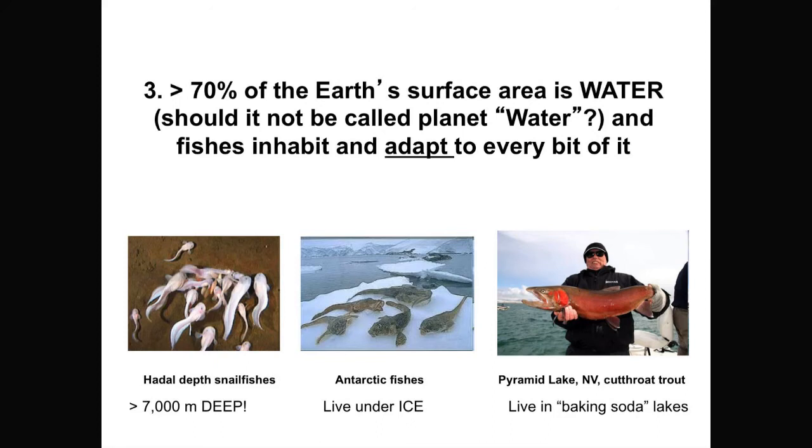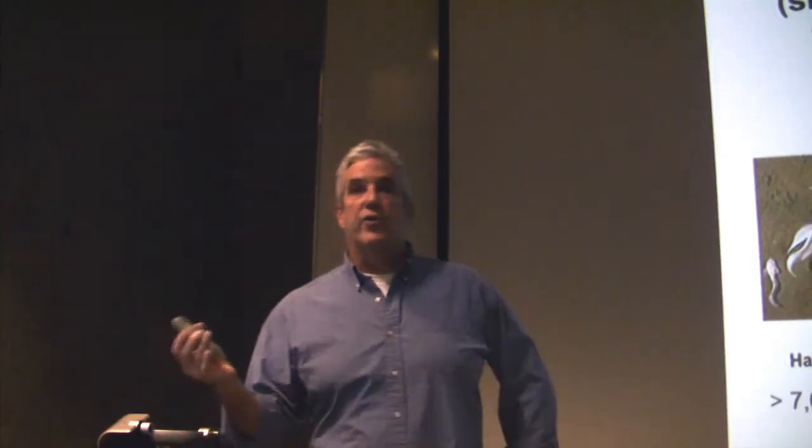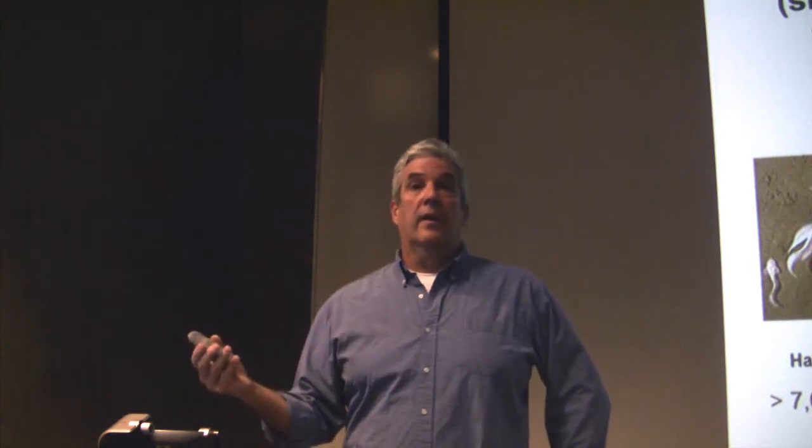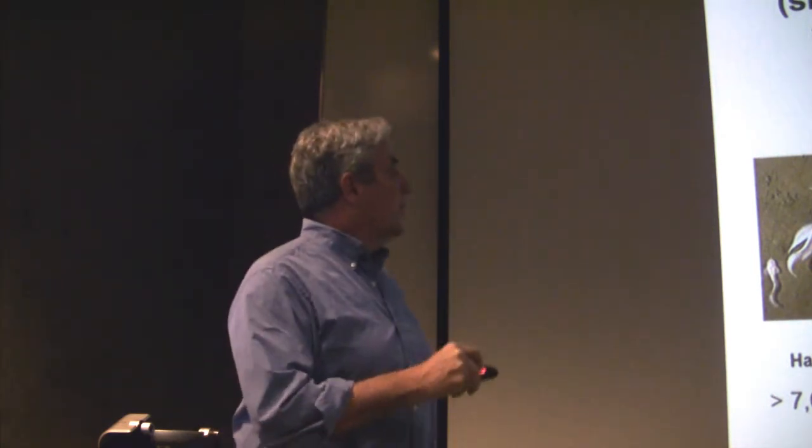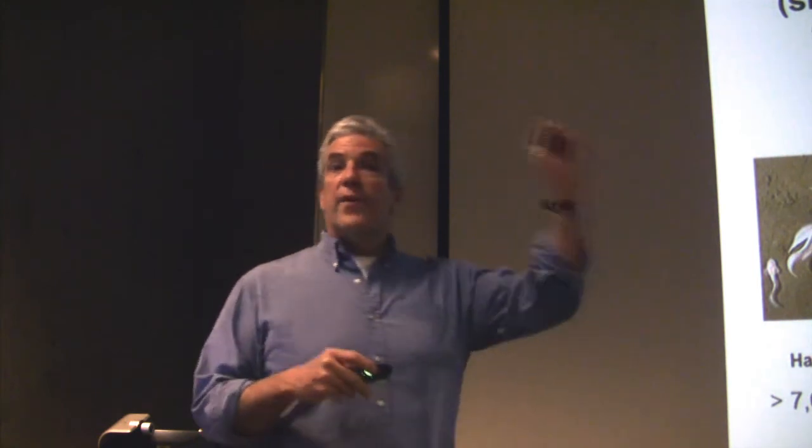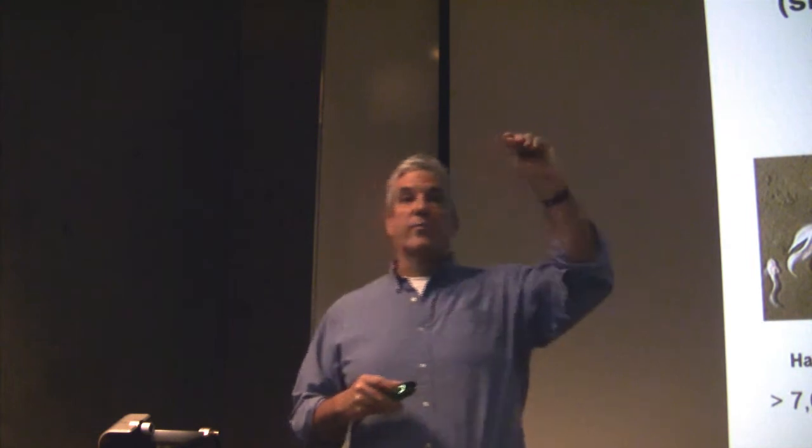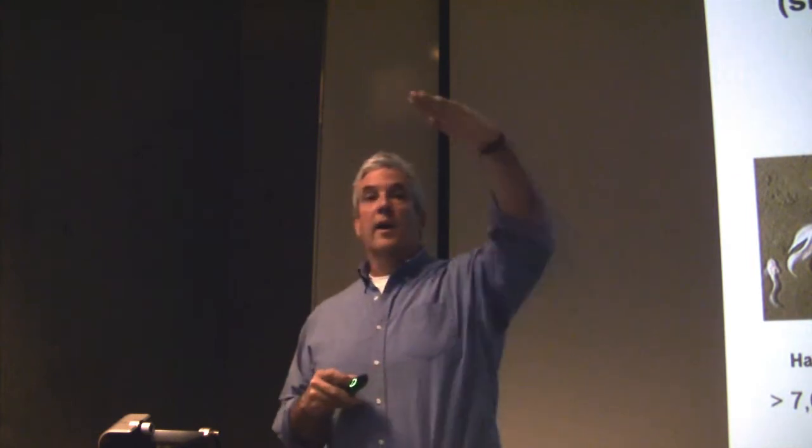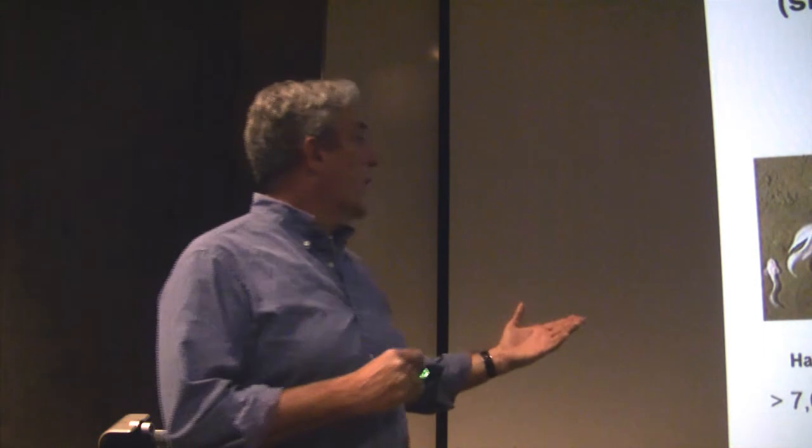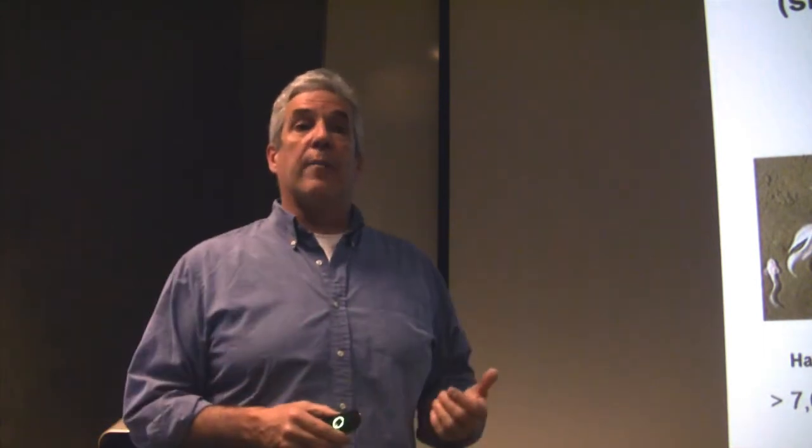Seventy percent of the Earth's surface is covered in water. It's a total bias that we call it Earth. We should be calling this planet water, because most of the surface area and most of the volume is water. And fishes inhabit and adapt to every single bit of it. And I've just got five examples, three shown here. These are snail fishes that inhabit areas like the Marianas Trench, that's 7,000 meters deep. These are Antarctic ice fishes. They're shown here on top of the ice, but they actually live underneath the ice, eating algae and other life forms that are adapted to the under surface of the ice. Spectacular adaptive radiation in an area, you'd think, is totally inhospitable to animal life, but it's not.